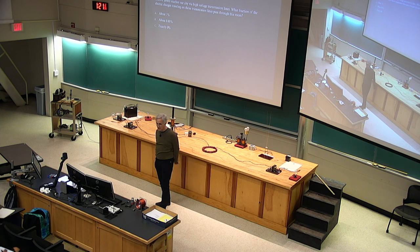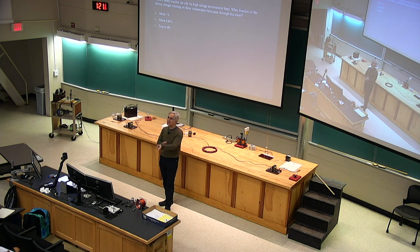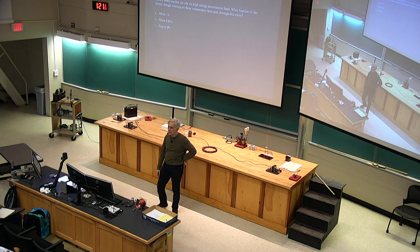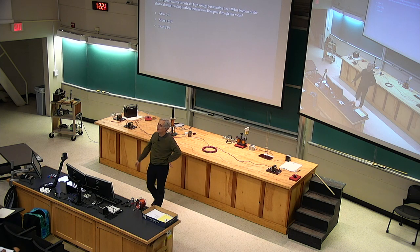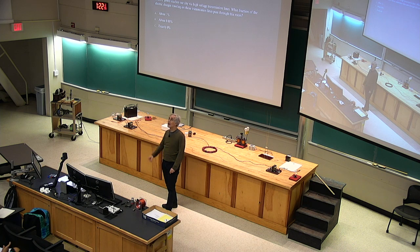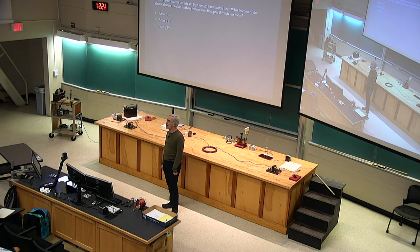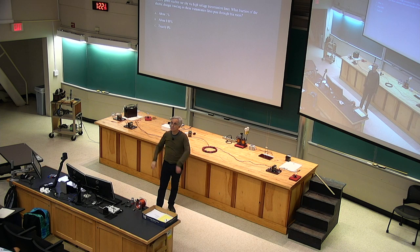Technology history is fun. Electric power reaches our city via high voltage transmission lines. If you go up Route 29 near Hydraulic Road, there are big high-powered power transmission lines crossing over. If you could label all the charges going through those wires, paint them all blue, what fraction of those charges are passing through this room to run lightbulbs and stuff like that?